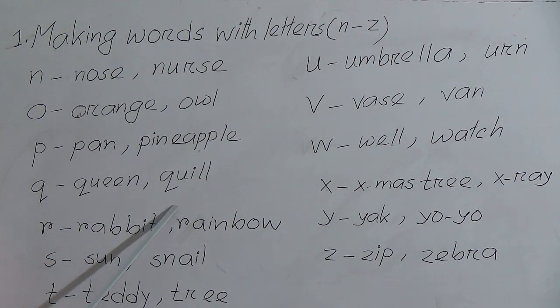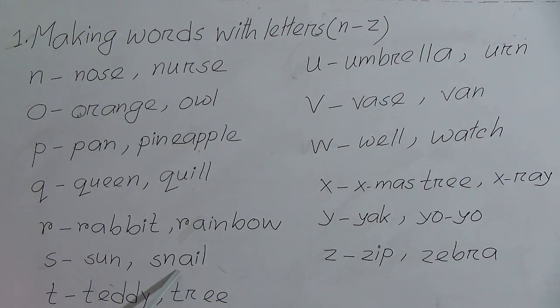Q for queen, Q-U-E-E-N. Q for quill, Q-U-I-L-L. R for rabbit, R-A-B-B-I-T. Rainbow, R-A-I-N-B-O-W. S for sun, S-U-N. S for snail, S-N-A-I-L.